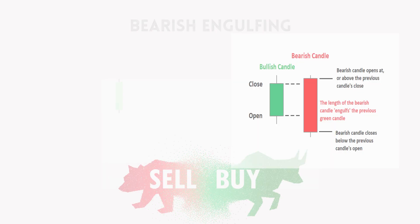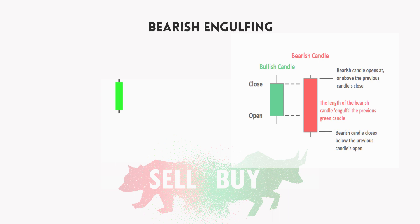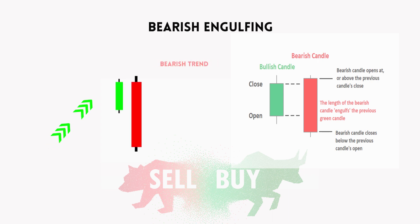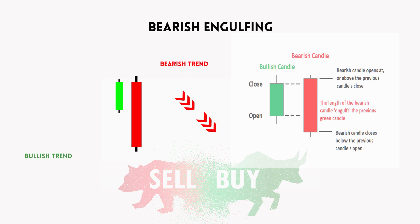A bearish engulfing candlestick pattern is a technical analysis pattern that can signal a potential reversal in a financial market's trend. This pattern typically occurs at the end of an uptrend and suggests a possible shift to a downtrend.